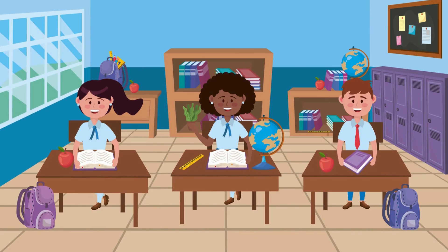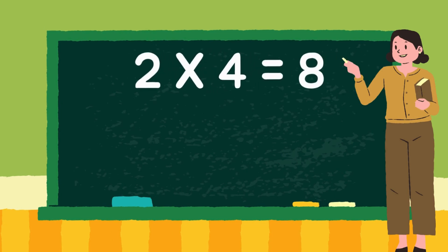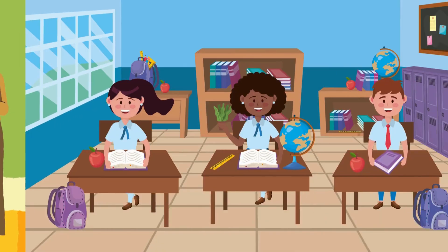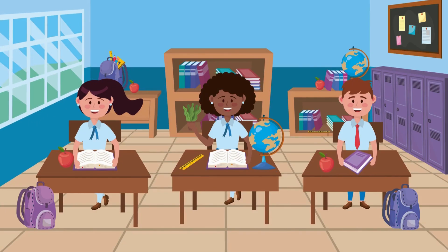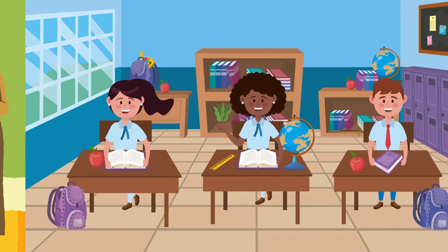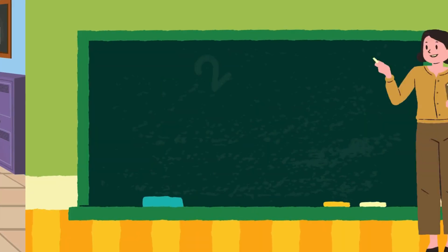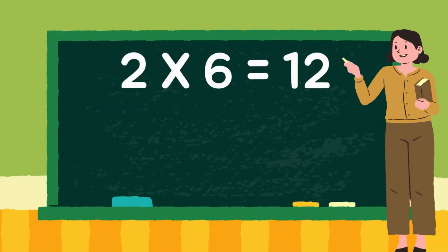2 ones are 2. 2 2s are 4. 2 3s are 6. 2 4s are 8. 2 5s are 10.